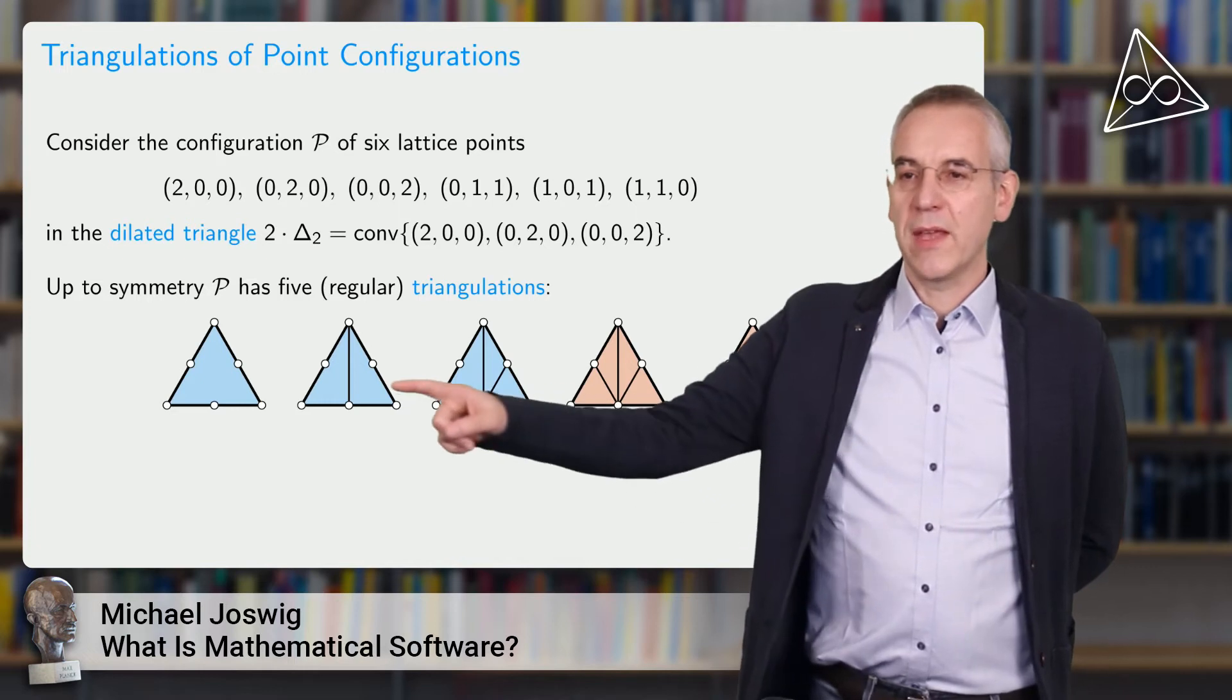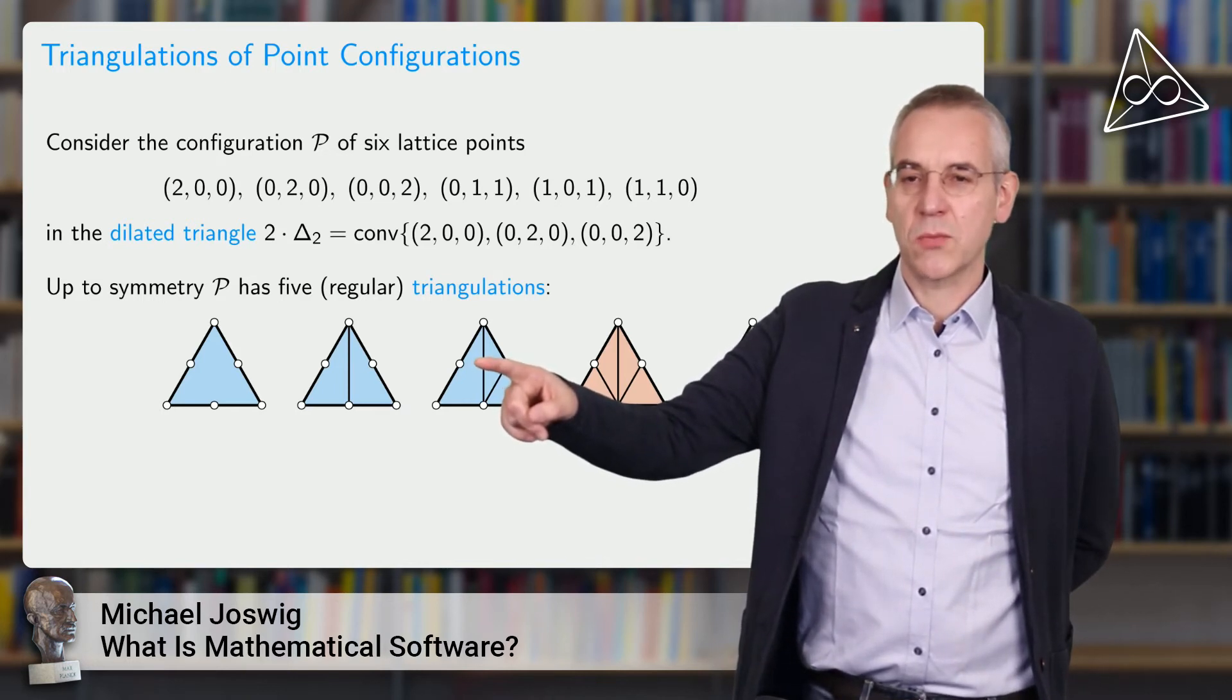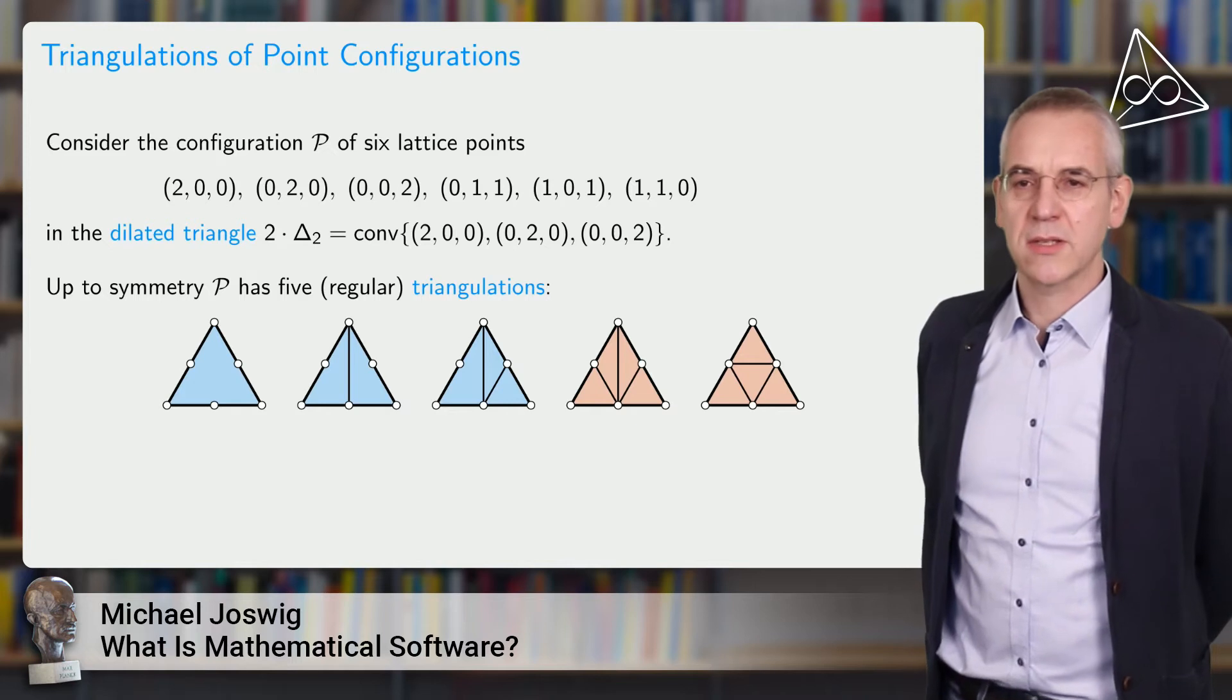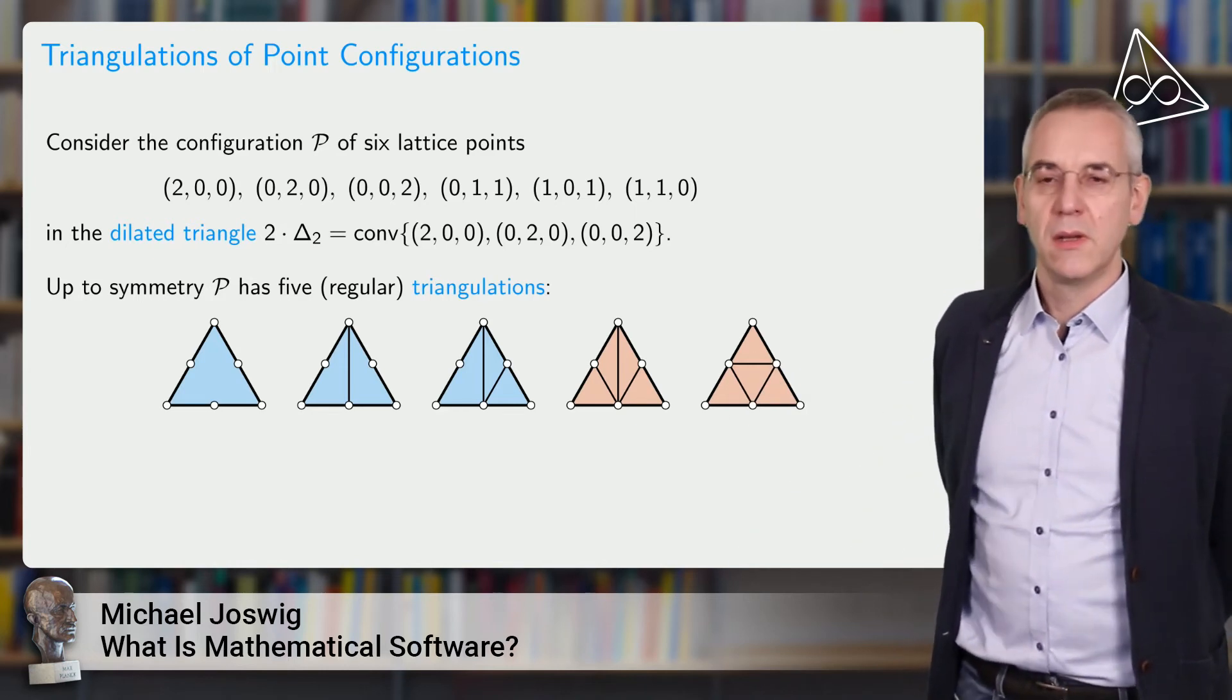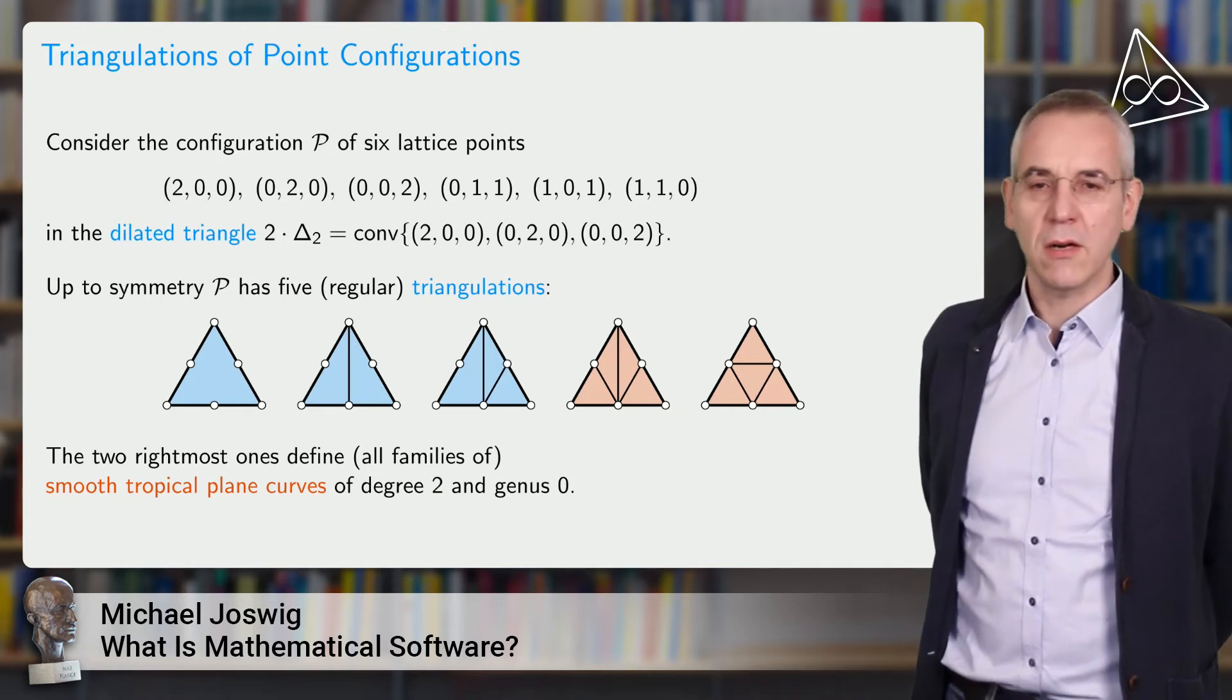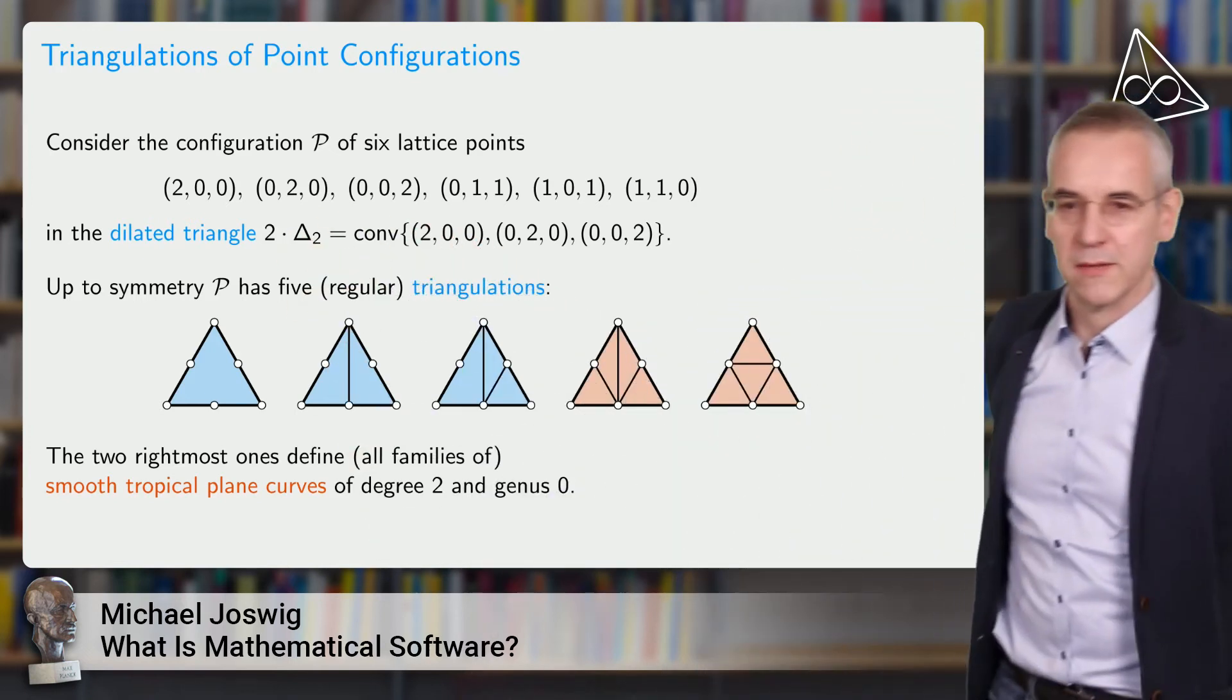They differ from the other ones. You can see this immediately. For the blue ones, there's at least one of the white points. These white points are the six points that I started out with. And at least one of them is missing. It does not occur as a vertex in one of the triangles. For instance, this one does not occur here and similarly for the other ones. Whereas, for the red guys, all the six points are used. That's why I'm more interested in those. Also, in this particular case, all triangulations satisfy a certain important geometric condition. They are regular, which means that you can see them as being induced by a height function and this is important geometrically. Why am I interested in the two red guys? They define all possible families of something which is called smooth tropical plane curves of degree two and genus zero. Plane curves means because it's a finite point configuration in the plane and degree two is because I chose the scaling factor of two here in this thing.